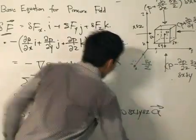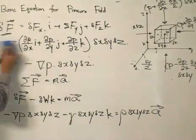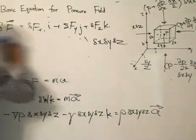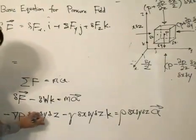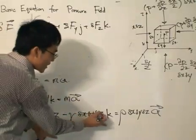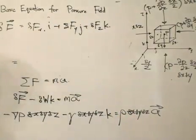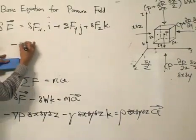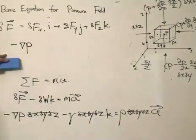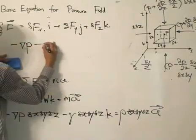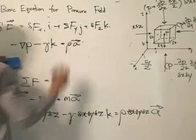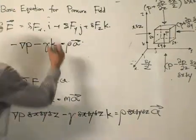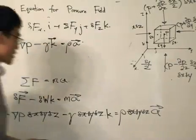We're almost done. Canceling the delta x, delta y, delta z volume terms throughout, our basic equation of the pressure field is: minus del p — the del operator on the pressure field — minus the specific weight in the k component, equals the density times the acceleration. And there we go — the basic equation of the pressure field.